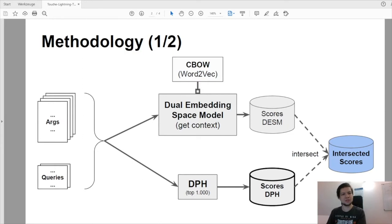So what does our methodology look like? After preprocessing, we applied a dual embedding space model as well as a DPH algorithm to calculate relevant scores for all of the arguments and queries.